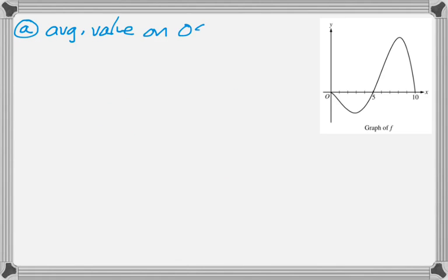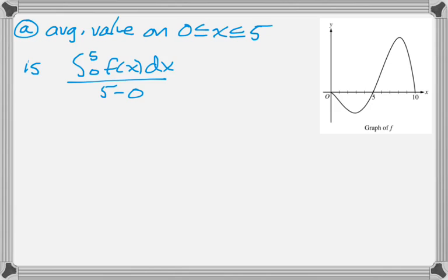The first thing we want to do is find the average value on the interval from 0 to 5. We know that's going to be the integral divided by the interval, so that's the integral of f(x) from 0 to 5 over 5 minus 0.